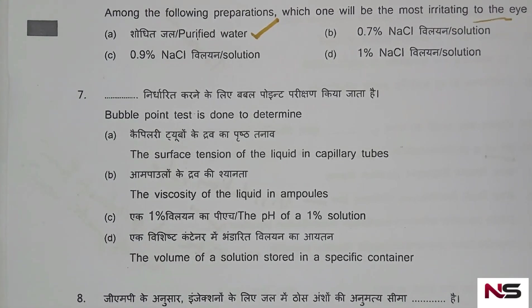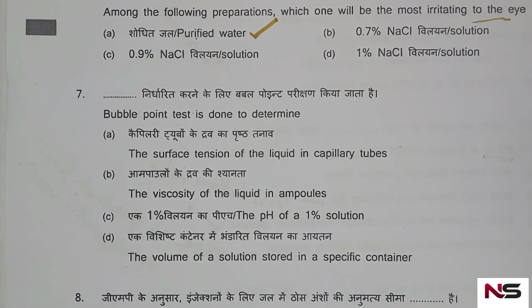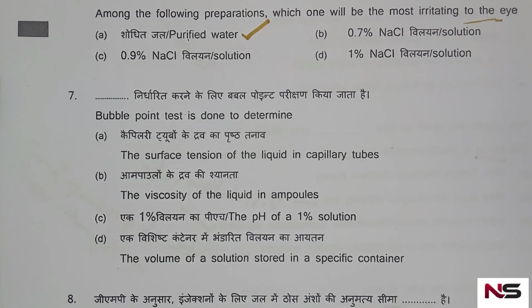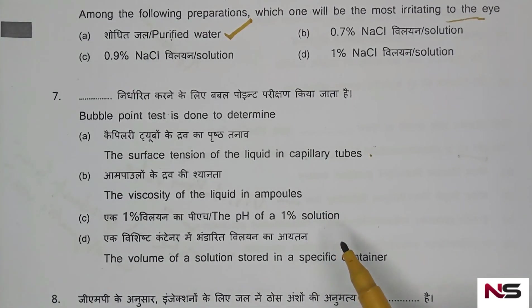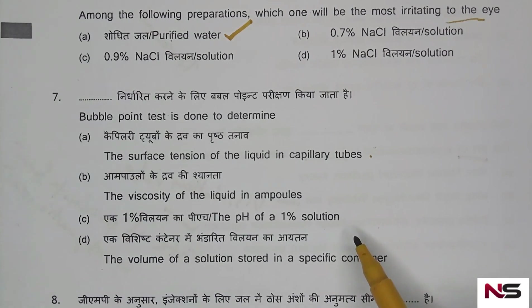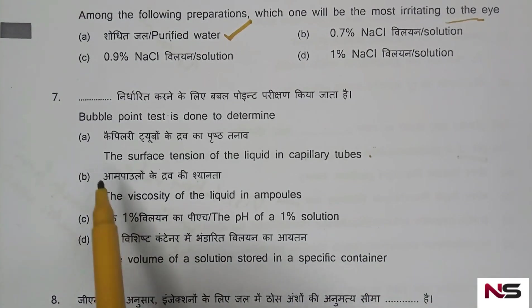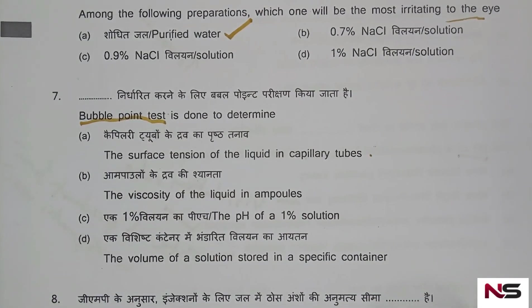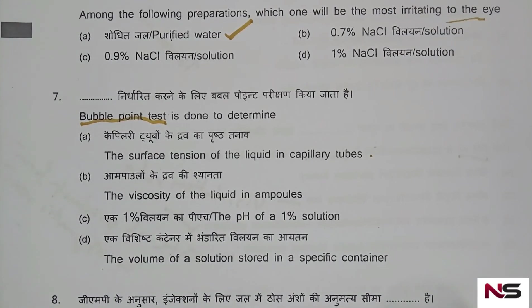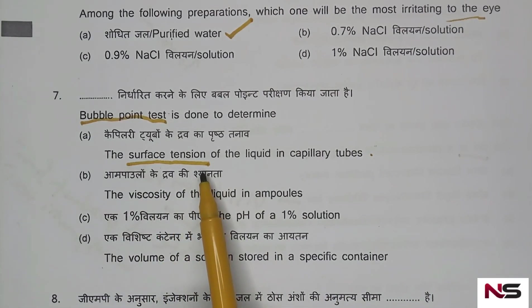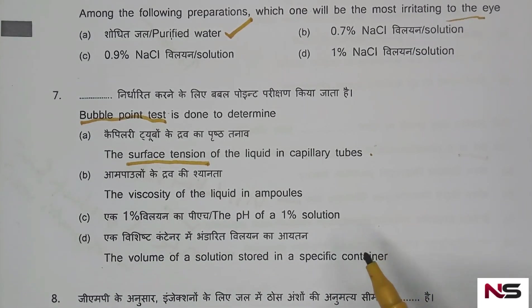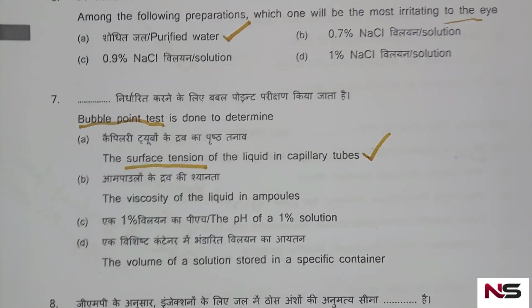Question 7: Bubble point test is done to determine — options: A) the surface tension of liquid in a capillary tube, B) the viscosity of liquid, C) the pH of a 1% solution, D) the volume of solution stored in a specific container. The correct answer is option A. Bubble point test is used for finding out the surface tension of liquid in the capillary tube.